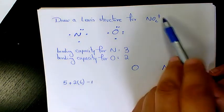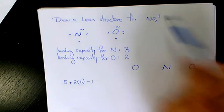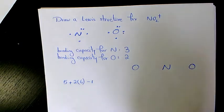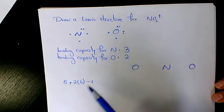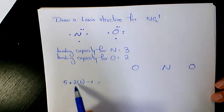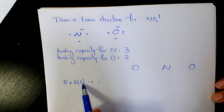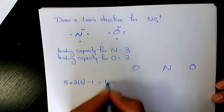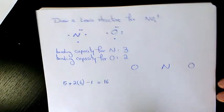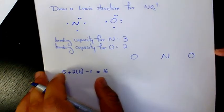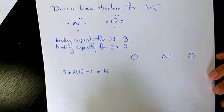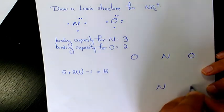Minus one because it says plus. So since it's plus and we are dealing with a polyatomic ion, since it's plus we need to subtract one. So five plus two times six, twelve, so it's going to be 17 minus one is going to be 16. So we have 16 available valence electrons.